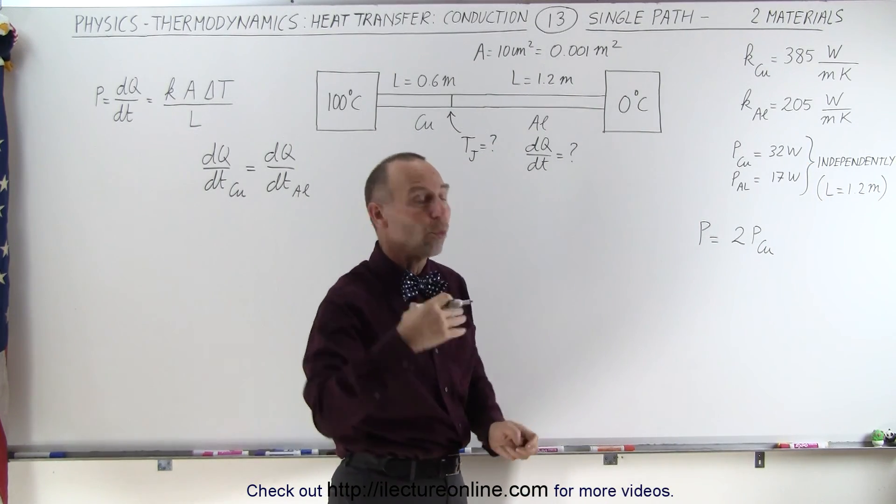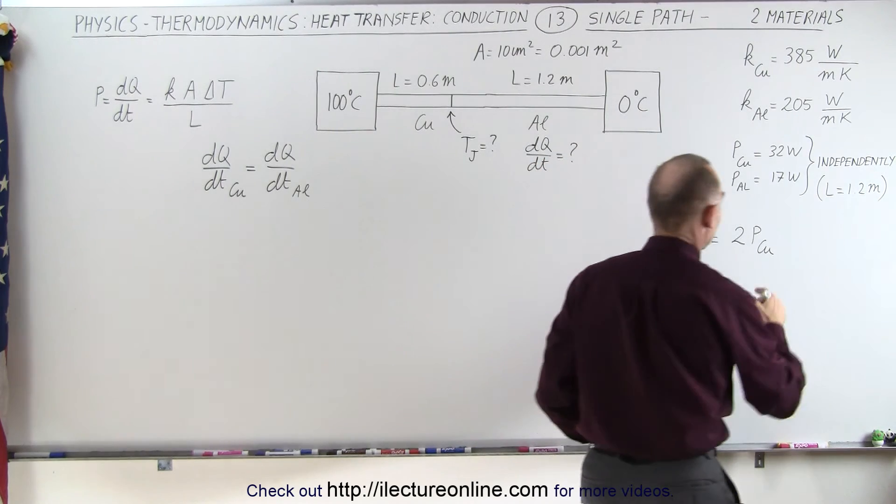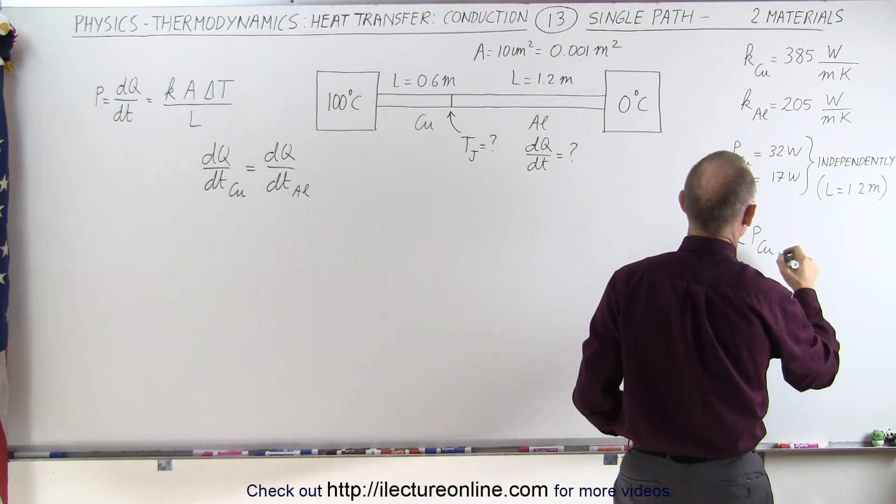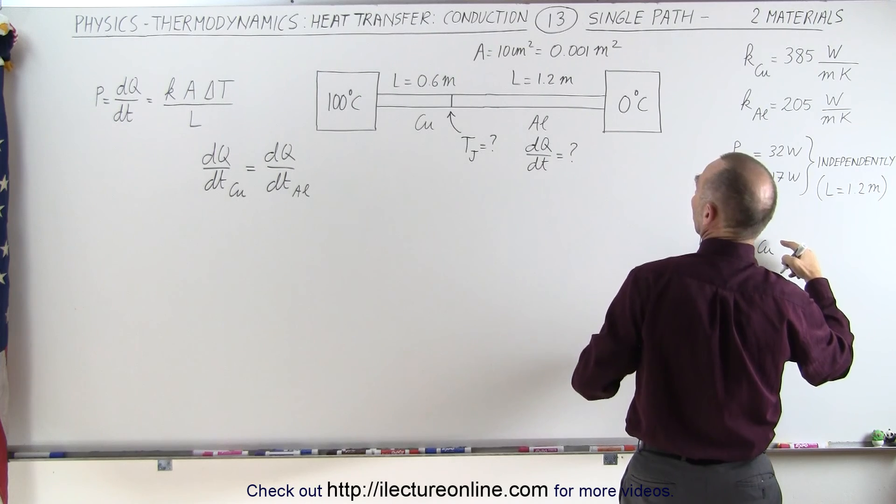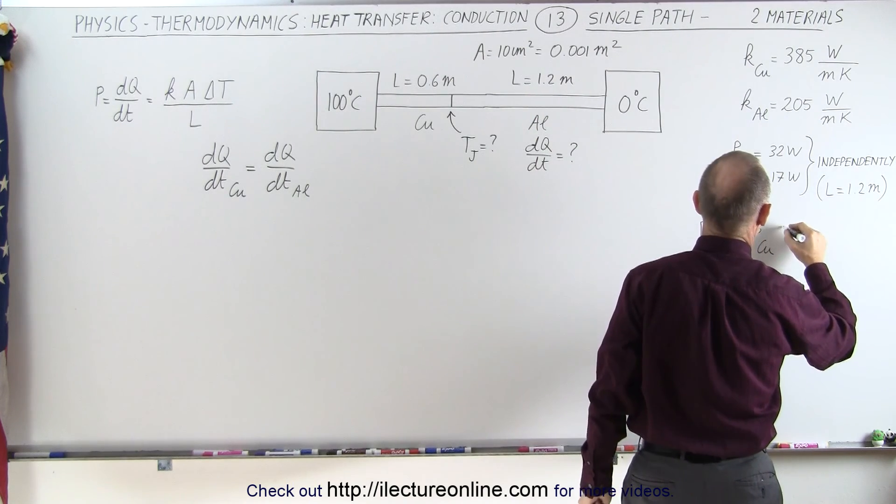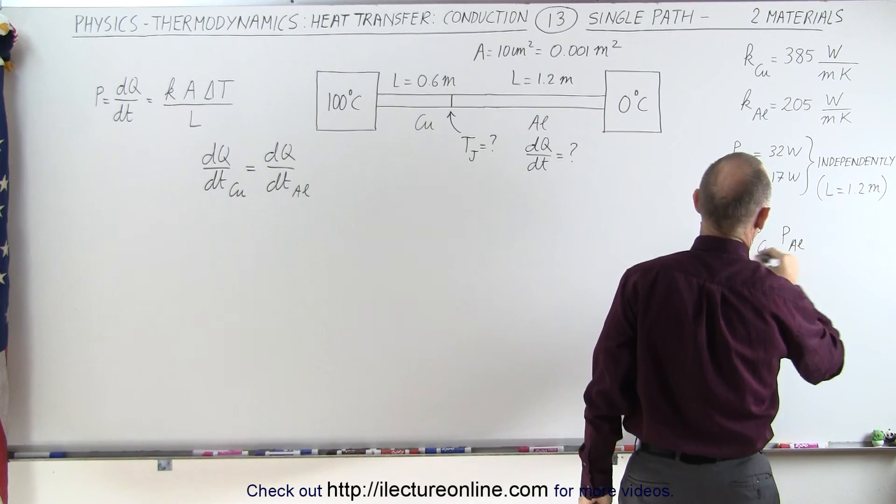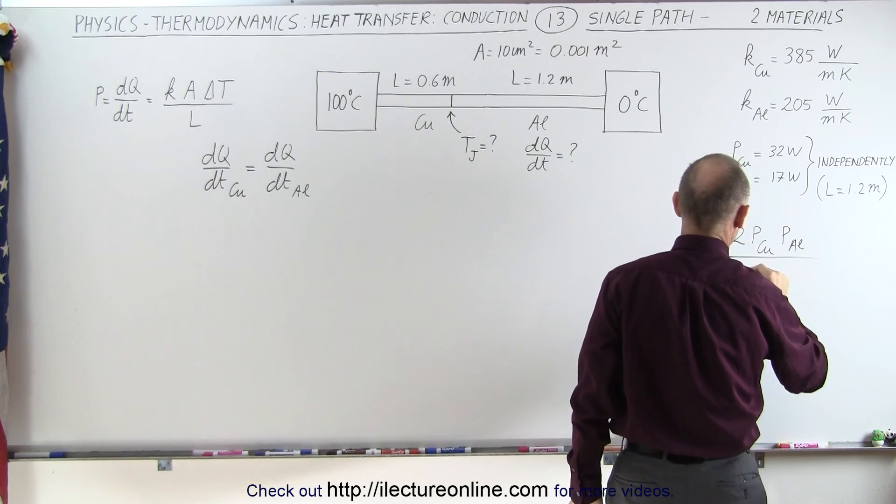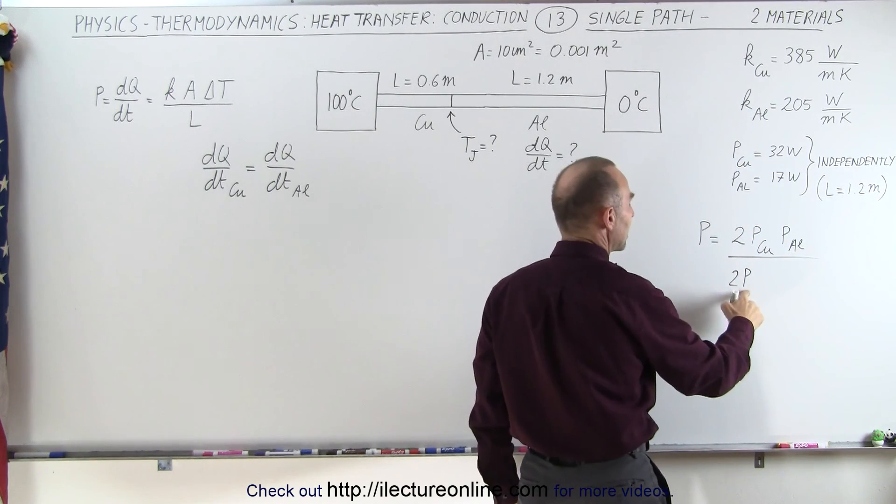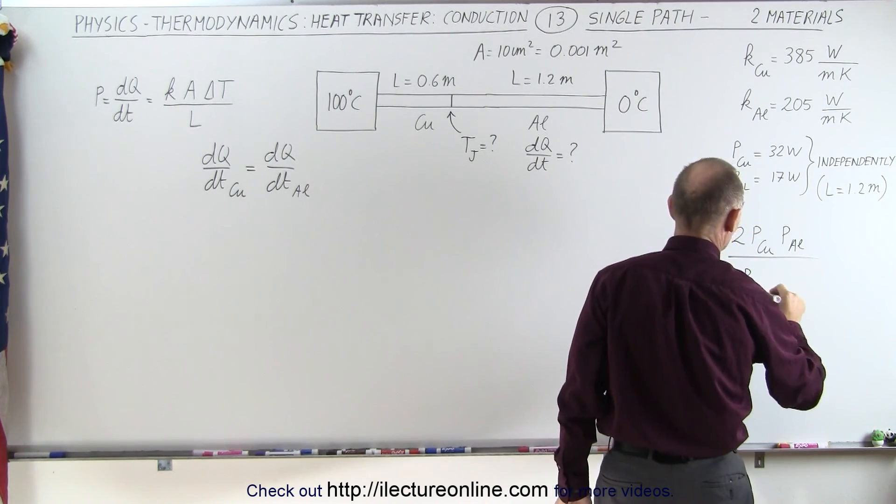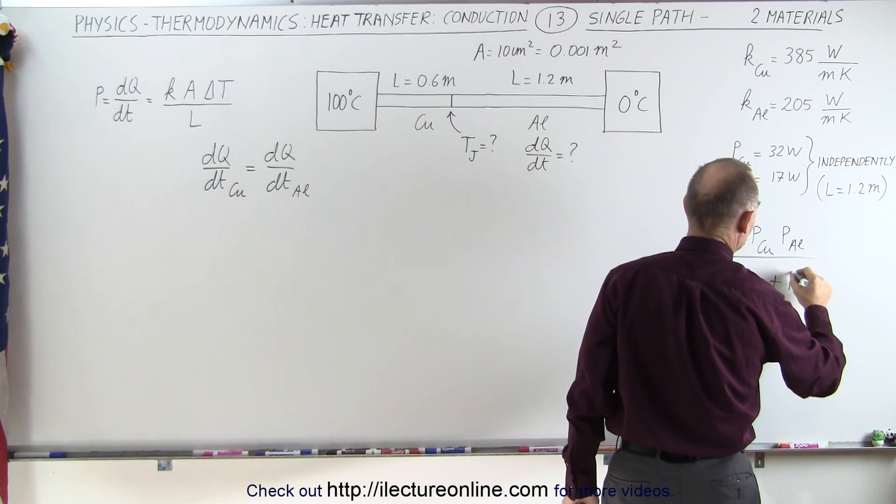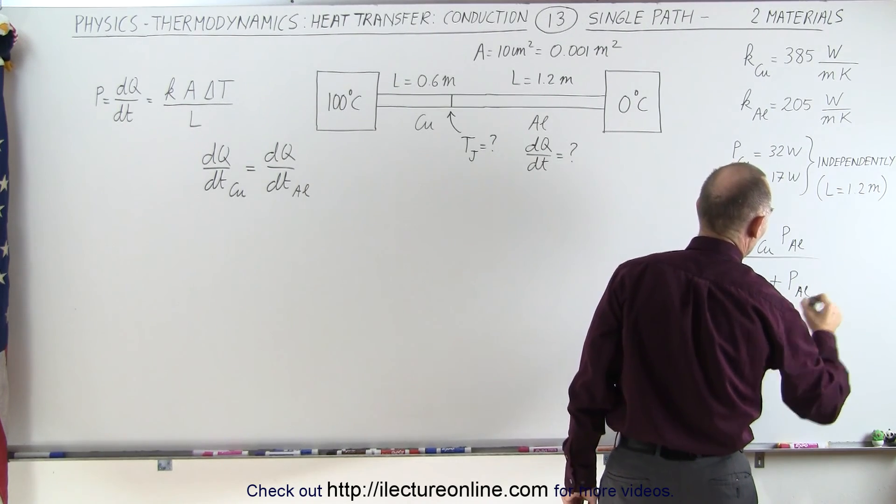Half the length means twice the heat conducted, and so we put two times the heat for the copper power transfer, and then we have one times for aluminum divided by the sum of the two. But again, we have to multiply the heat transfer to the copper section by two and we add to that the heat transferred through the aluminum section.